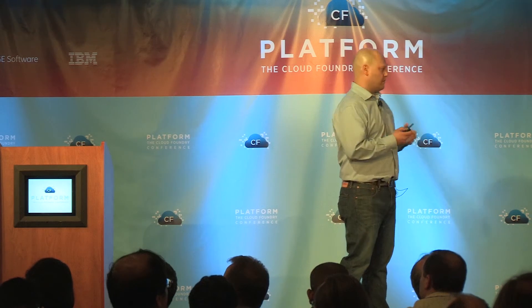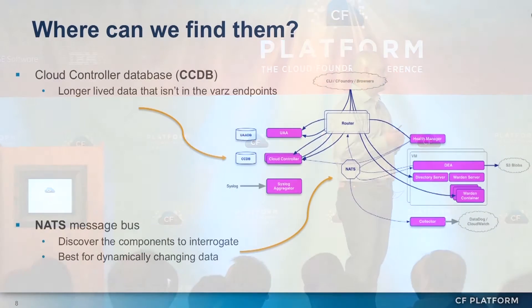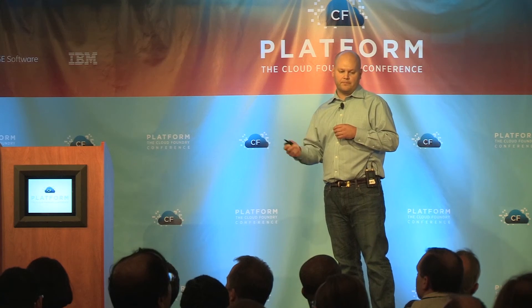The data we're looking for we can generally find in NATS, and some of it is in the Cloud Controller Database. NATS is the message bus that helps us discover things that are on the system, interrogate their endpoints, and find out about their health.